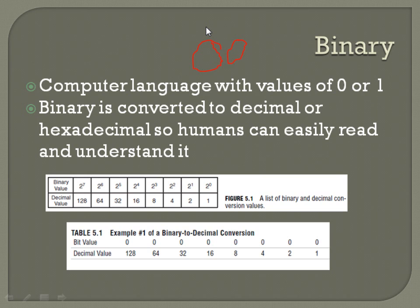Binary is a two-based system, decimal is a ten-based system, and hexadecimal is a sixteen-based system. Each hexadecimal character represents four bits. For hex, since you're going up to sixteen, your digits stop at nine for decimal values. When you get to ten decimal, that becomes 'A' in hexadecimal, and it keeps going — decimal eleven is 'B', all the way to decimal fifteen, which is 'F'. So F means all bits are filled all the way through.